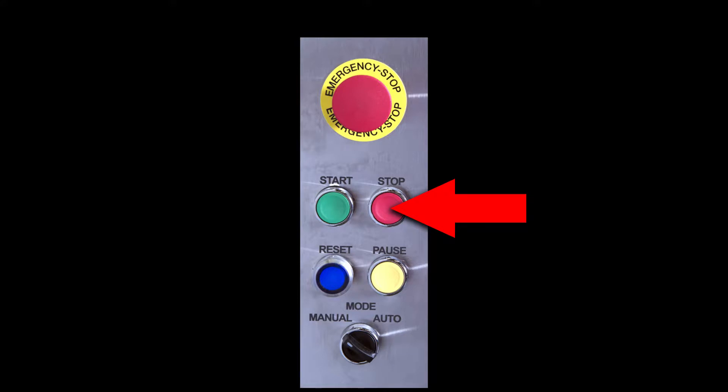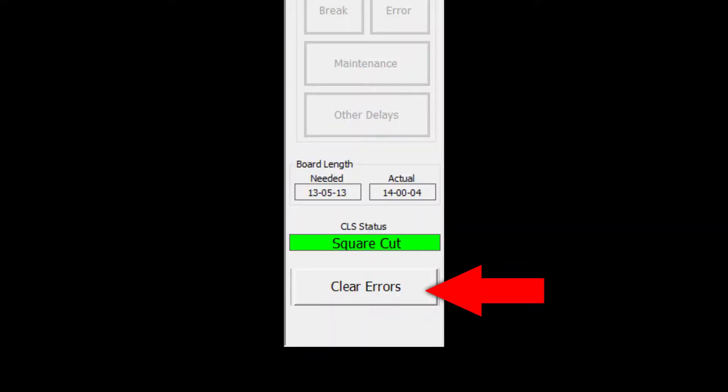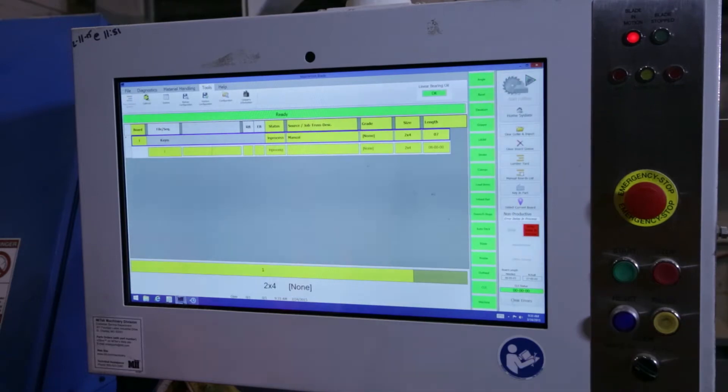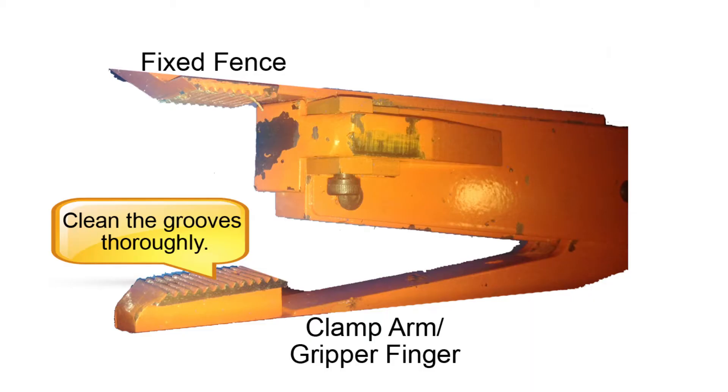With the saw blade motor off, clear the error and switch the saw to manual mode. The first step is to ensure the gripper clamp arm, sometimes called gripper finger, opens and closes smoothly.